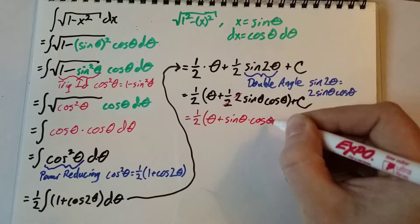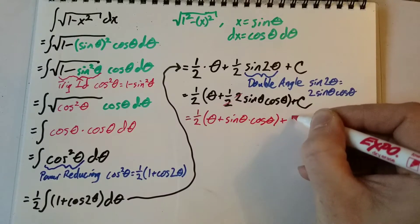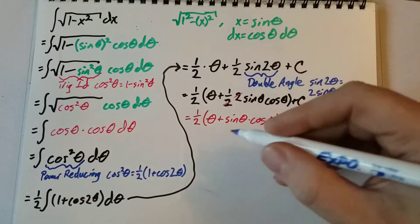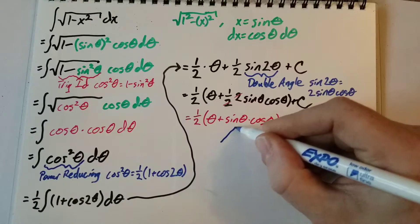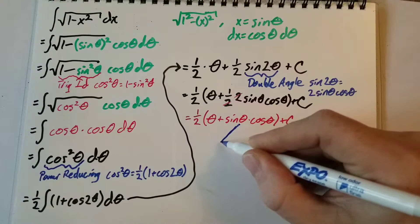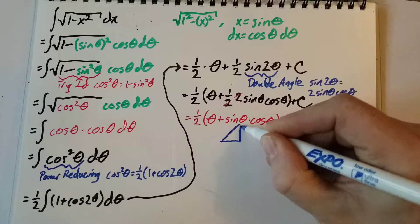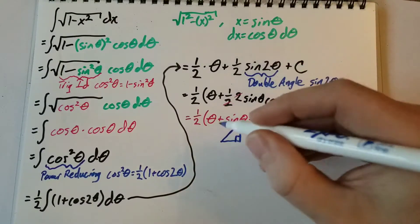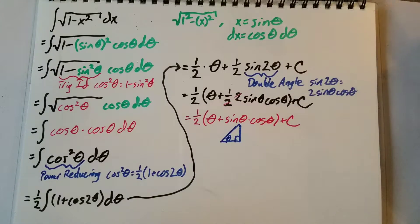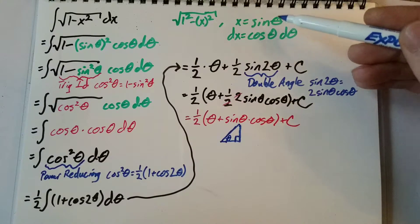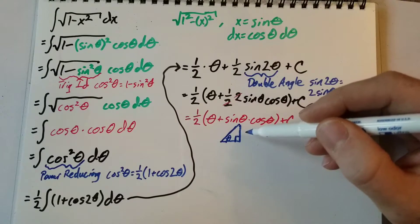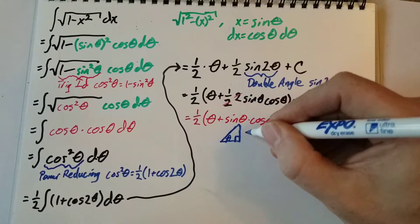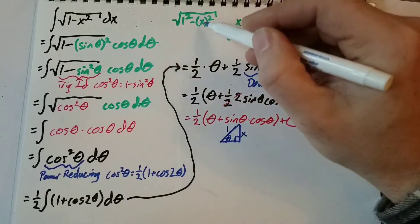Now we want to look at our right angle triangle to back-substitute. We have our theta here, and since we used sine theta, we use opposite over hypotenuse. So our opposite is x and our hypotenuse is 1.